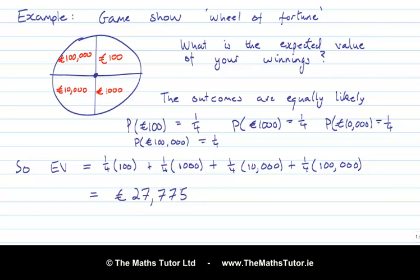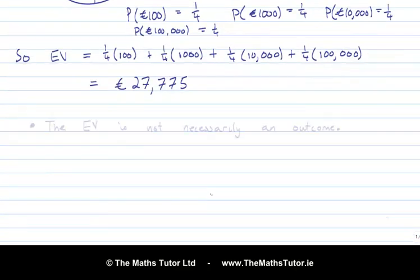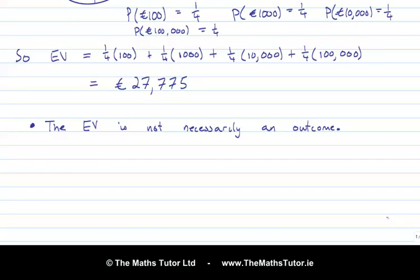Now, before we finish, I want to make two important observations about expected value. And the first one is apparent in this example that we've just done. And so, the first point is that the expected value is not necessarily even an outcome of the trial. And you can see that in this example here. The four outcomes were €100, €1,000, €10,000, and €100,000. And the expected value came out to be none of these. It was another value altogether.